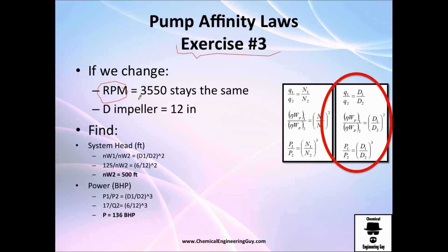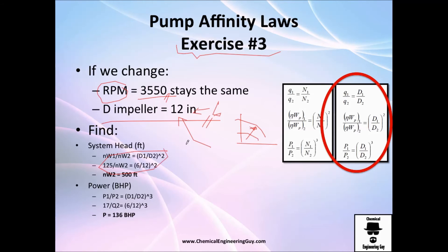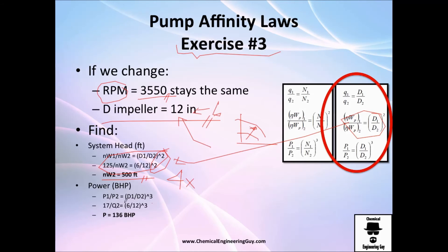Exercise 3: RPM stays the same but the impeller diameter changes from 6 to 12 inches. Why might you do that? Perhaps to increase volumetric flow rate. Using the diameter-to-head affinity equation — with the second power — I solve for the new system head and get 500 feet. That's four times the original, which makes sense: doubling the diameter squares the head ratio, giving four times more head.